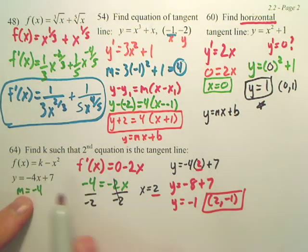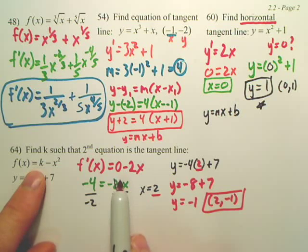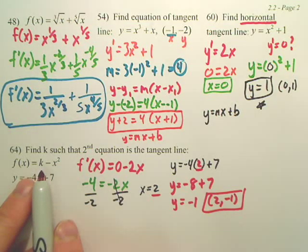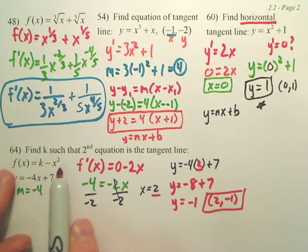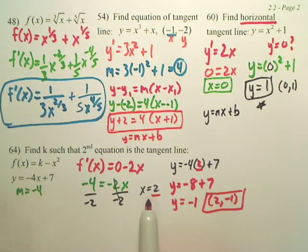Doesn't this graph at this point, this graph always has a slope of negative four, correct? This graph up here, we want to find out where this derivative has a slope of negative four, and we found that as x equals two.